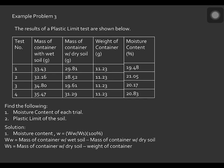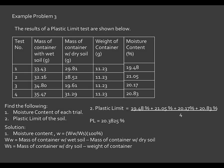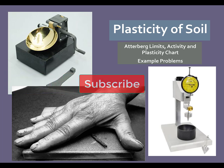To solve for the plastic limit of the soil, from the 4 plastic limit tests conducted, we simply average the moisture contents. The plastic limit equals (19.48% + 21.05% + 20.17% + 20.83%) / 4. Therefore, the plastic limit is equal to 20.3825%.